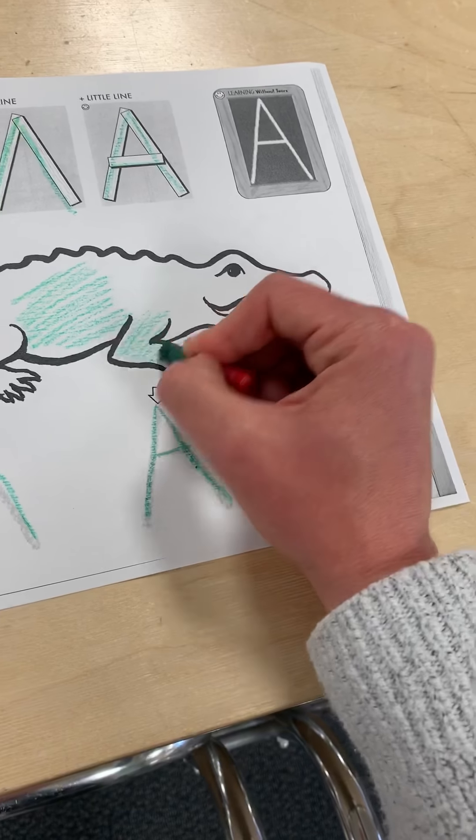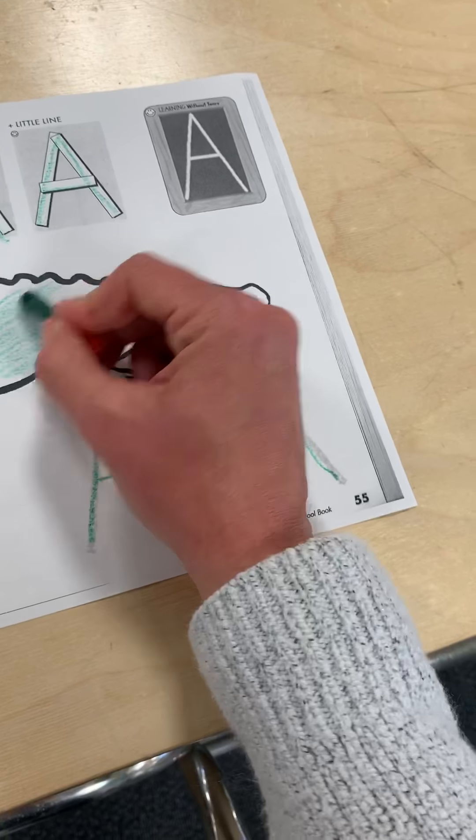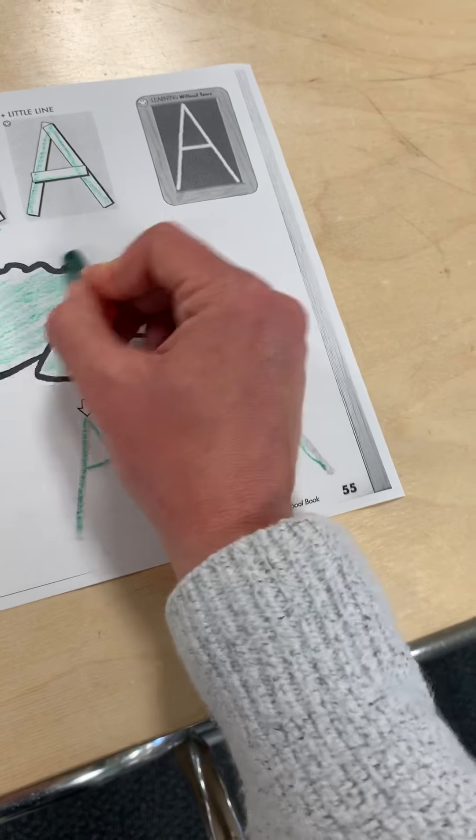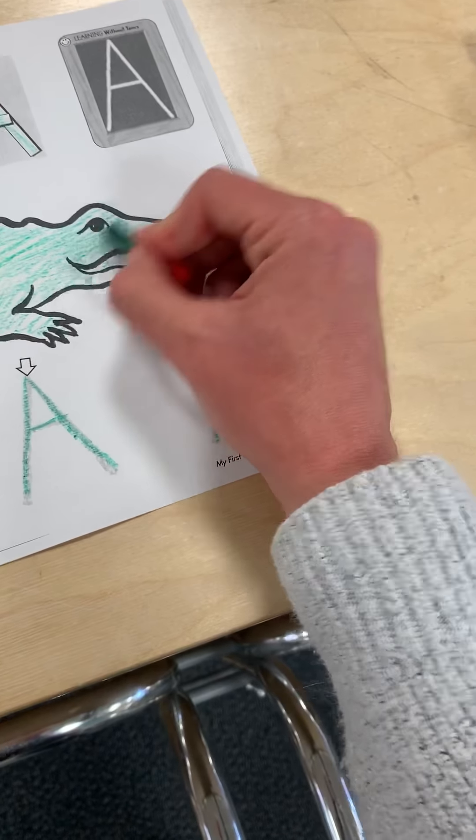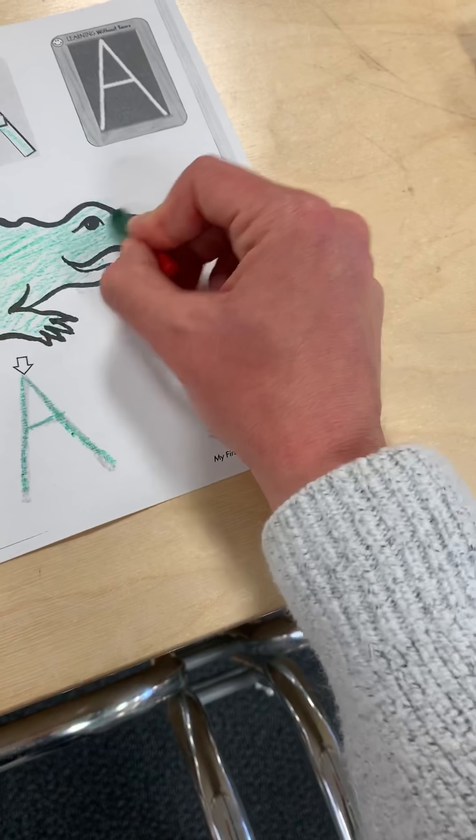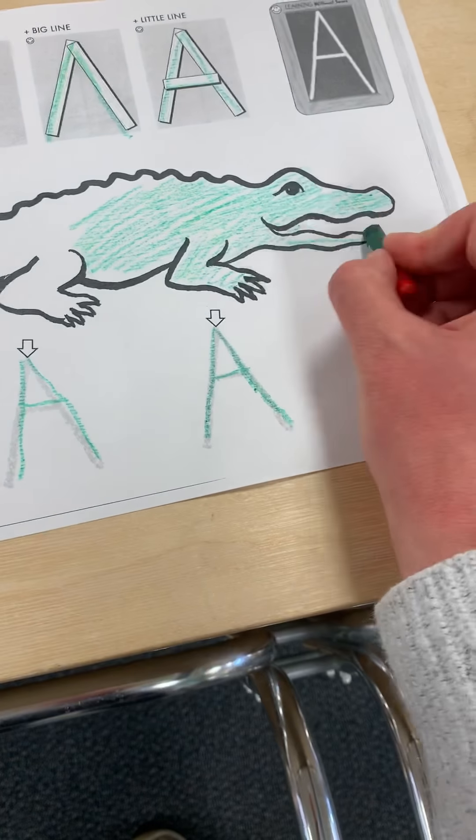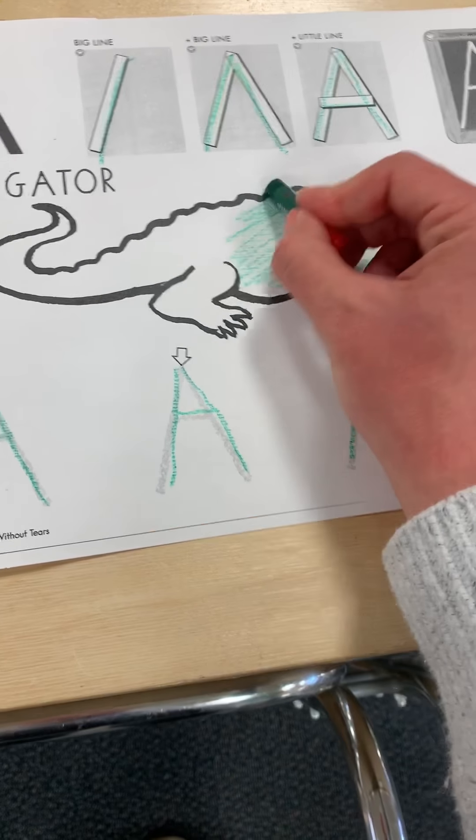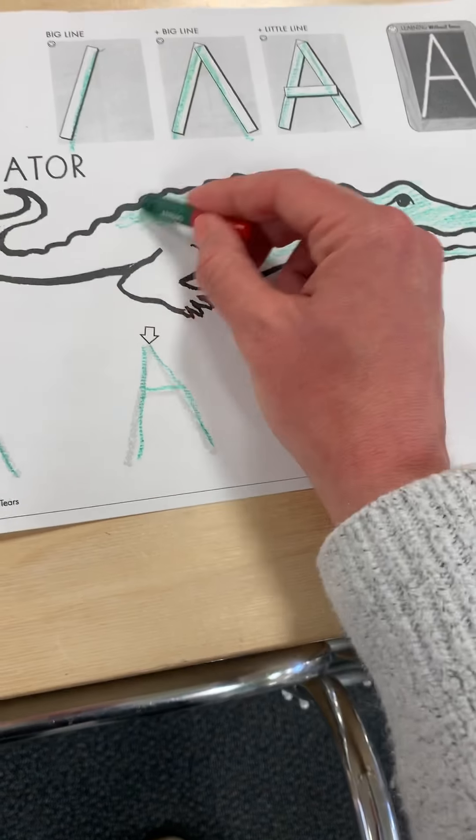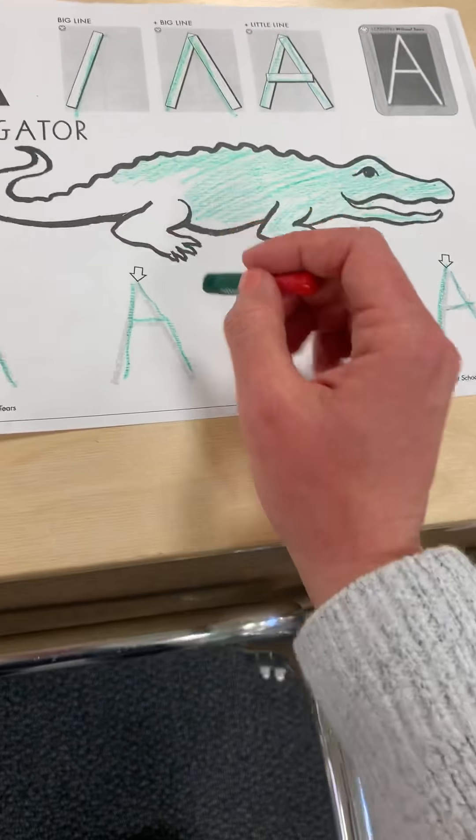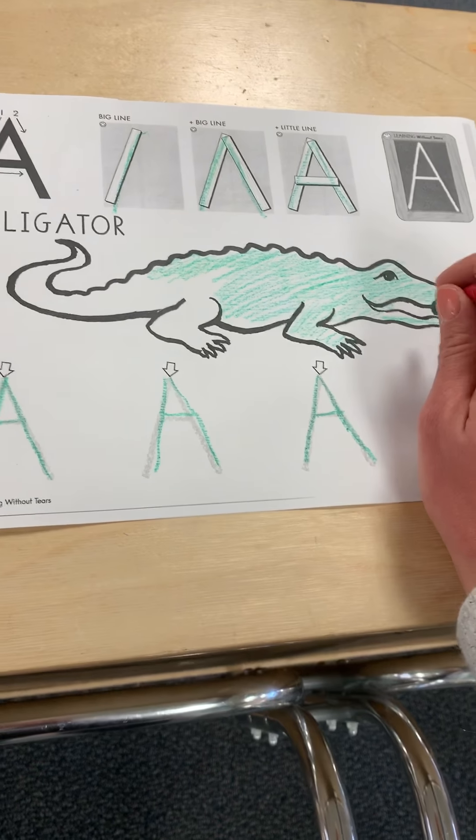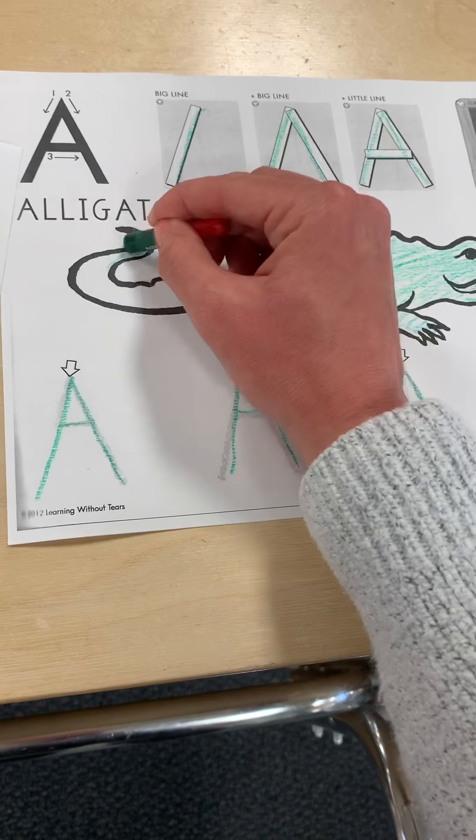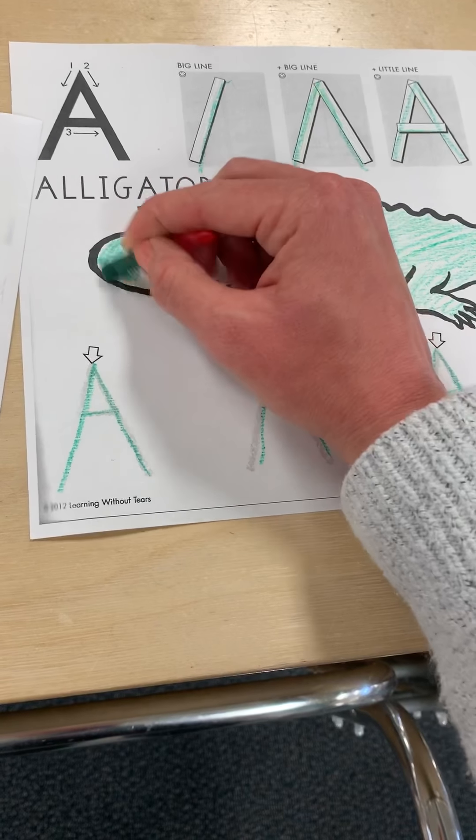Parents, if your child needs help by all means assist. We want to go at the speed of your child. So if they need help with just staying on the lines or coloring within the lines, that is okay. We're just going at the speed of your child. If they just see the paper and they just start coloring, that is okay too. That's where they're at.